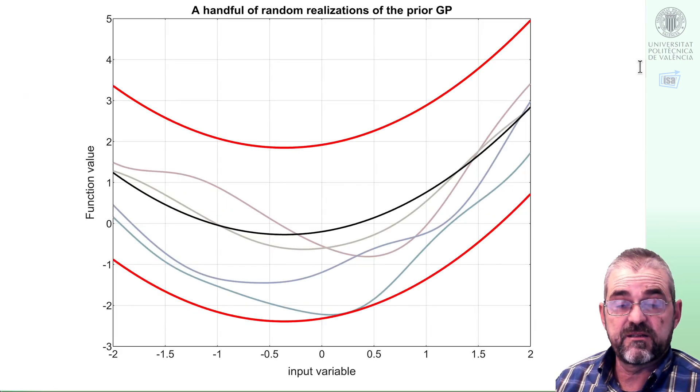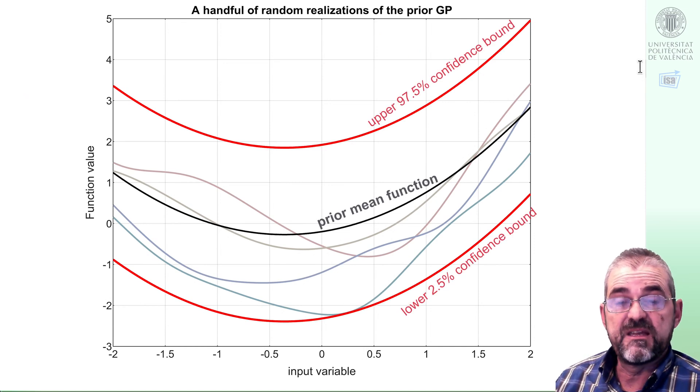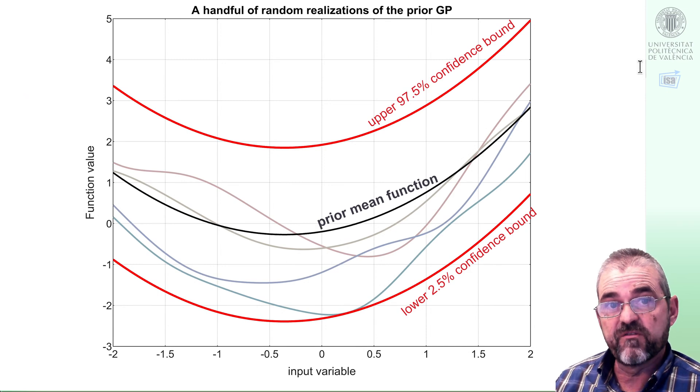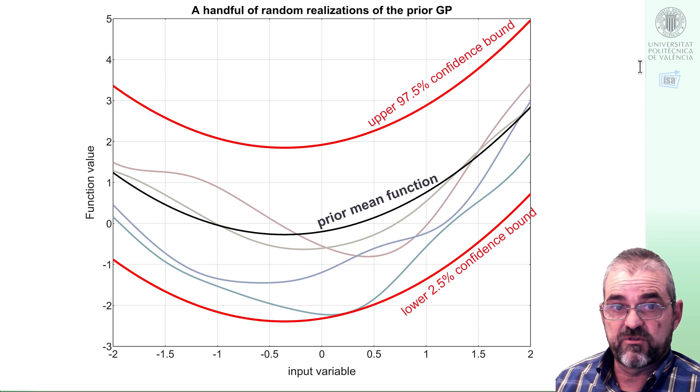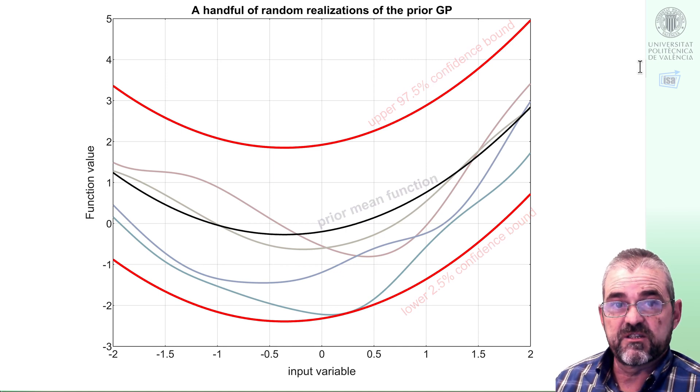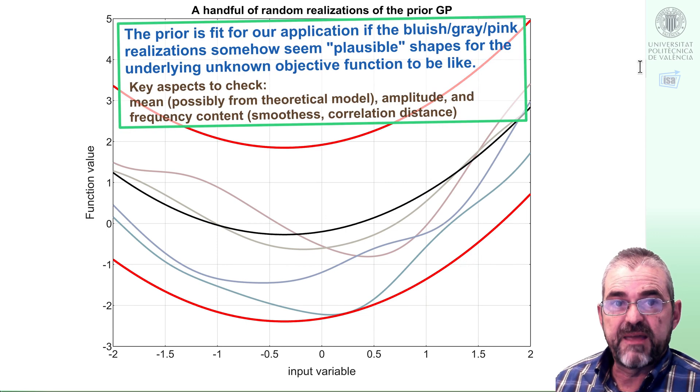So the basic idea is that we have a Gaussian process with some prior mean function in black and let's say 95% confidence interval in red, plus minus 1.96 standard deviations. And then a Gaussian process is a way to encode random functions such as the ones in greenish, blue, pink, etc. lines we see here.